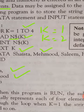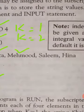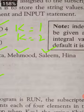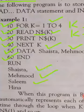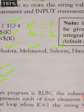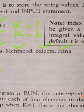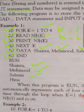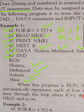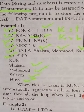Next jaise hi K ki value 3 hogi to jo next DATA mein value hai, that is Salim, woh READ DATA statement jo hai woh read out karegi aur us ke baad PRINT jo hai woh saath hi screen par ho jaaye gi, and that is Salim. Aur jaise hi K ki value 4 hogi to jo fourth value hai, that is Hina, woh read out hogi aur screen par print ho jaaye gi. Is tareeqe se yeh charon string values screen par print ho jaayein gi by using PRINT statement, aur yeh values input hongi by using READ and DATA statement. Is tareeqe se array jo hai woh READ aur DATA statement ko use karte hue fill up kiya ja sakta hai.